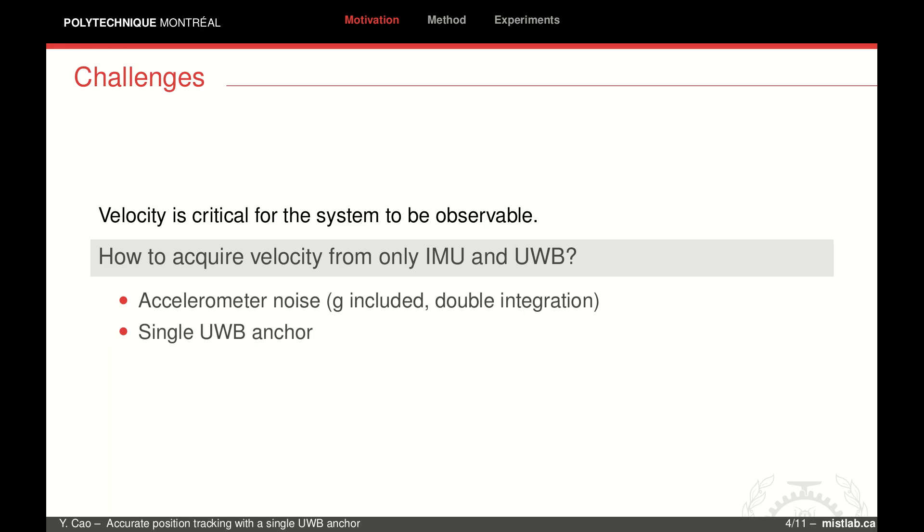Although we do not use velocity sensors, the system still needs a velocity measurement to be observable. Getting a reliable velocity from a low-cost IMU or UWB is very challenging. The integration of acceleration from IMU drifts dramatically when using low-cost MEMS IMU sensors. Our novelty in this paper is that we estimate the velocity by combining the IMU and UWB.